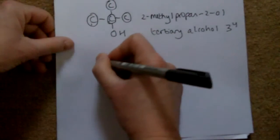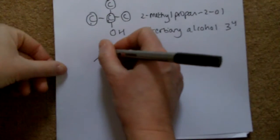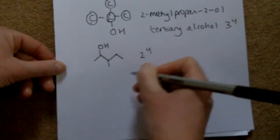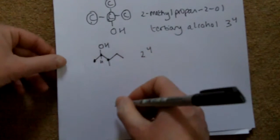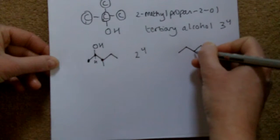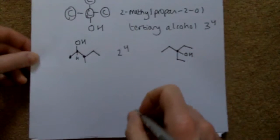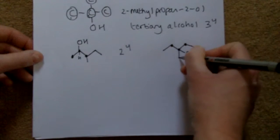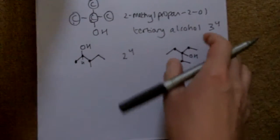Let's do a quick example — is this a primary, secondary, or tertiary alcohol? That's a secondary alcohol because the carbon is joined to two other carbons, with one H there. Another example: the carbon that the OH is joined to is joined to three other carbons, making it a tertiary alcohol.